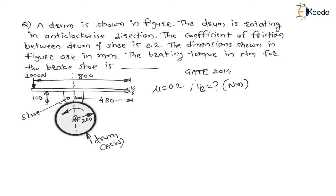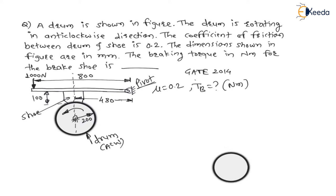Looking at the arrangement, a 1000N force is applied at the free end of the lever. One end is pivoted. There is a shoe on this lever — this is the brake shoe. Check all the dimensions and calculations shown in the figure.